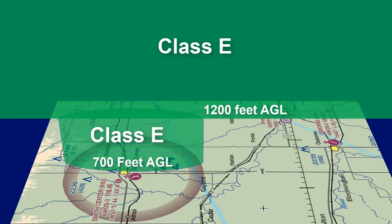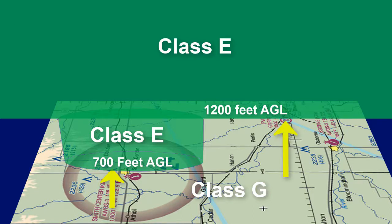To understand Class G airspace a little further, let's look at an example. Here on the chart, we have Smith Center Airport surrounded by the magenta ring. As we learned in the Class E video, Class E starts 700 feet AGL within the border. Class G starts at the surface until it reaches Class E at 700 feet AGL. Outside of the border, Class G starts from the surface up to 1,200 feet AGL, where Class E then takes over.